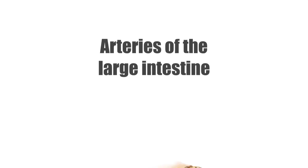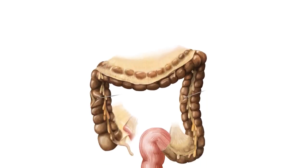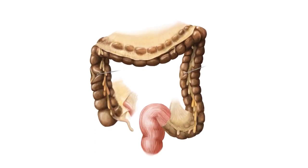Before we look at the arteries that supply the large intestine, let's first familiarise ourselves with the structure and function of this organ. The large intestine extends from the distal end of the ileum to the anus, covering a length of almost one and a half metres in adults. Its role is to absorb salts and fluids from the gut contents, converting it into feces.